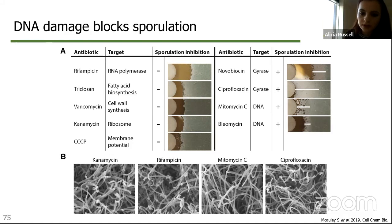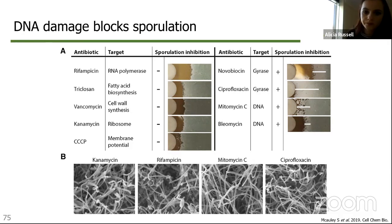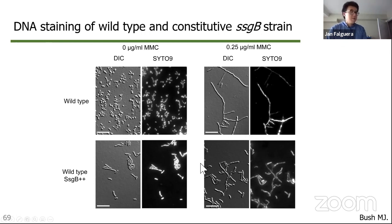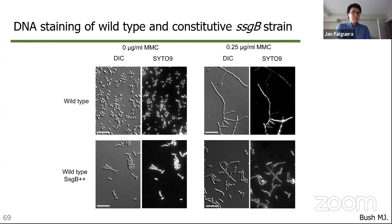Another question: in the SSGB overexpression strain, the DNA should still be damaged — do you see that happening? To an extent, yes. This is an experiment performed by Matt Bush where he stained for the DNA. In the SSGB overexpression strain grown in the presence of DNA damage, comparing to the untreated sample where there's strong fluorescence in each spore-like particle, the fluorescence isn't as strong in the overexpression-plus-damage condition. So yes, there's still damaged DNA in there, which could contribute to the lack of viability I showed earlier.